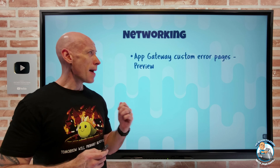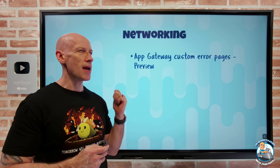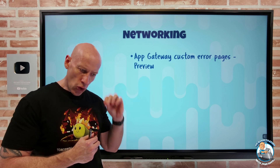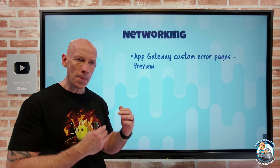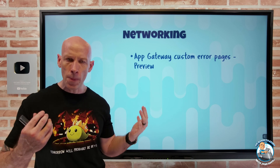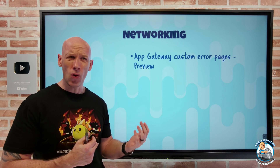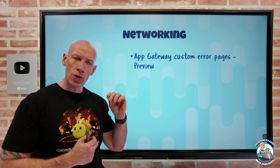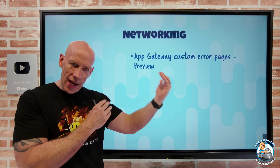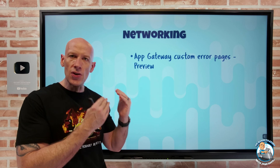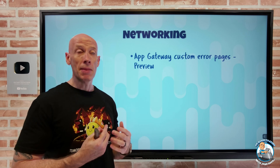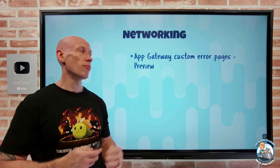Azure App Gateway now has custom error pages for more response codes. It had support for 403 and 502 before, but it's really extended that out. It's just an HTML page, one megabyte or less, and I can configure those custom pages either at a global gateway level or at individual listener levels. So now I can return more customized content from my app gateway.